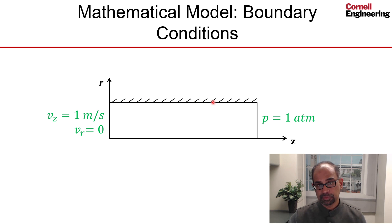This is the wall, and at the wall, the flow sticks to the wall. When viscosity is present, that's called the no-slip condition. So we'll set both components of the velocity to be zero at the wall.